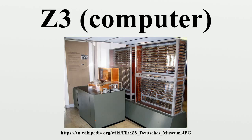The Z3 was completed in 1941 and was faster and far more reliable than the Z1 and Z2. The Z3's floating-point arithmetic was improved over that of the Z1 in that it implemented exception handling. The exceptional values plus infinity, minus infinity, and undefined could be generated and passed through operations. The Z3 stored its program on an external tape, thus no rewiring was necessary to change programs.